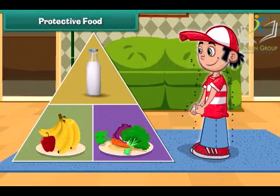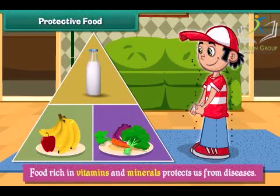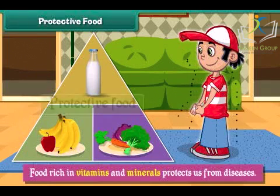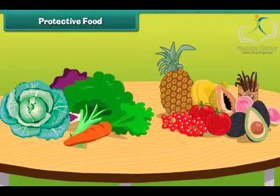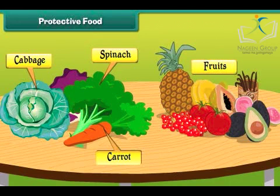Food rich in vitamins and minerals protects us from diseases. Therefore it is called protective food. Green leafy vegetables such as spinach and cabbage, carrots and fruits have lots of vitamins and minerals.